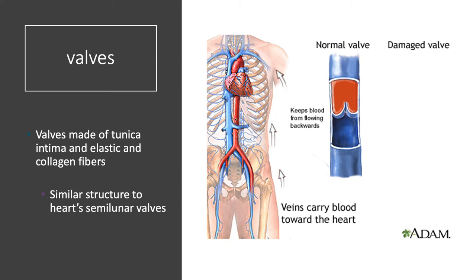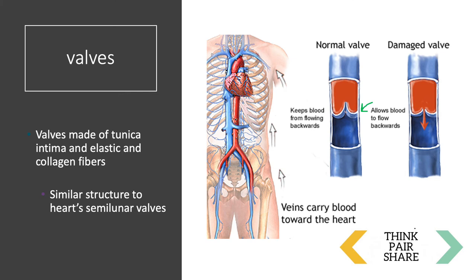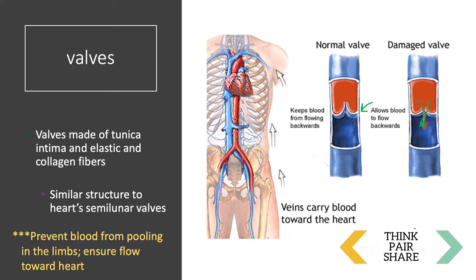If you had a faulty vein valve, it would allow blood to flow backwards, causing pooling. A normally functioning valve prevents blood from pooling in the limbs and ensures blood is continuously moving back toward the heart.